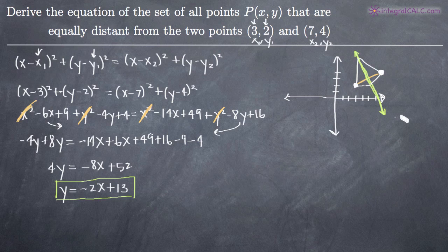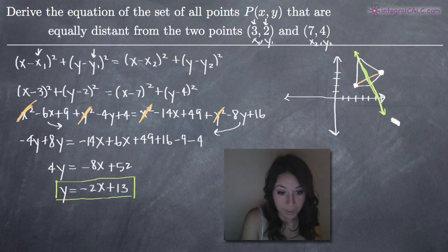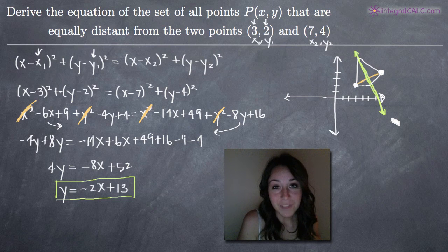And that line represents all of the points that are equally distant from the point (3,2) and (7,4). So that's it. That's our final answer. I hope that video helped you guys and I'll see you in the next one.